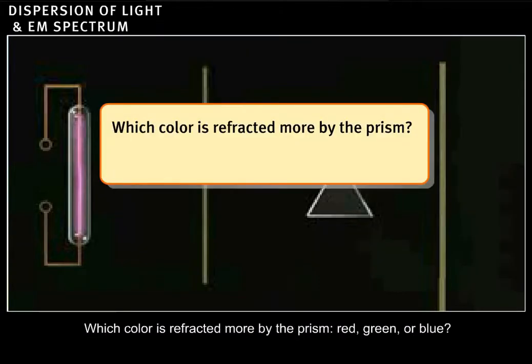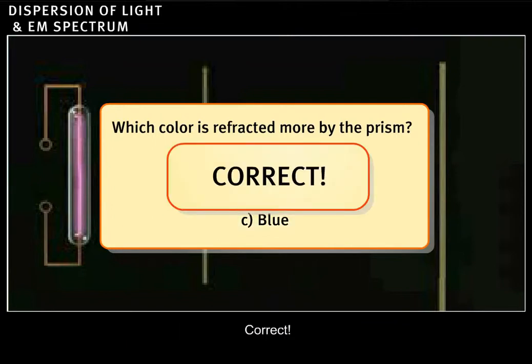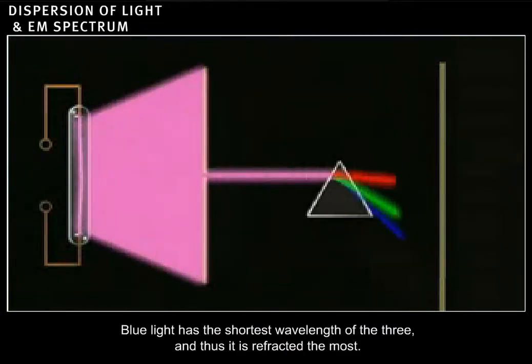Which color is refracted more by the prism? Red, green, or blue? Blue light has the shortest wavelength of the three and thus is refracted the most.